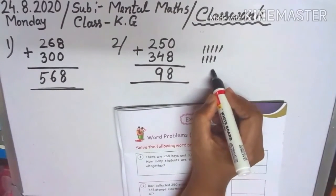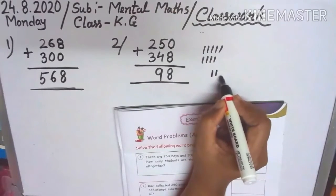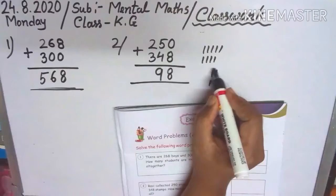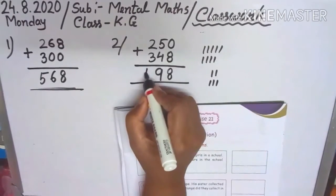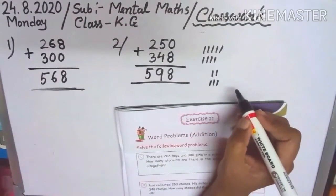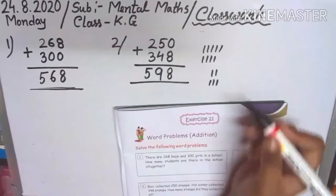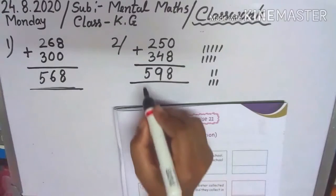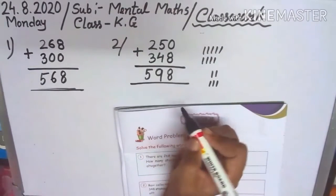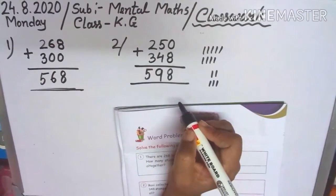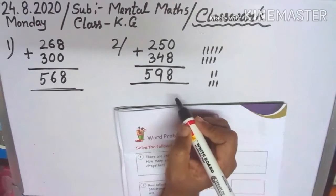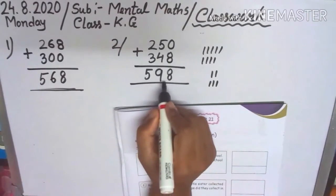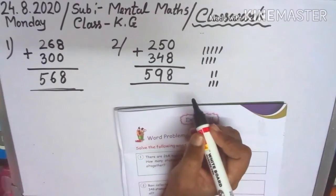So you draw the line 2 and 3. You count all together 5. So total number of stamps 598. Answer. So answer is total number of stamps 598. Next, 3.